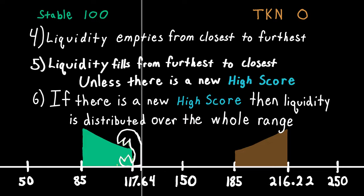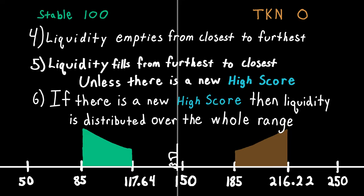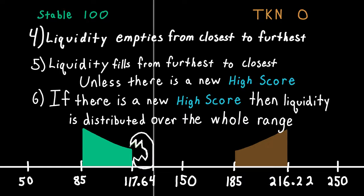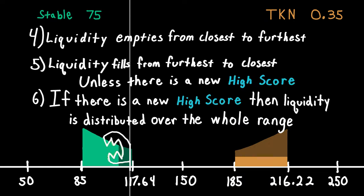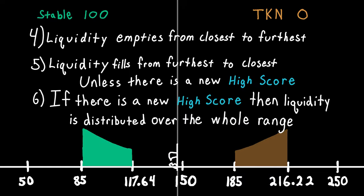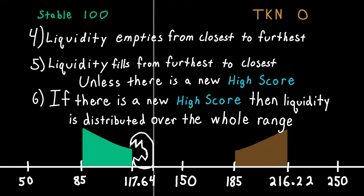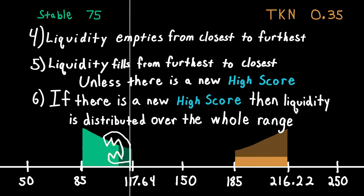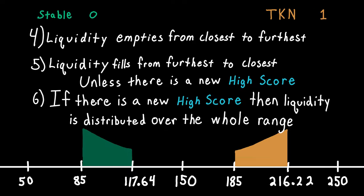Each incremental buy in this buy range is trading away stable to receive TKN, and each incremental piece of TKN added to the sell range is a new high score. So all of the TKN bought is evenly distributed across the whole sell range.